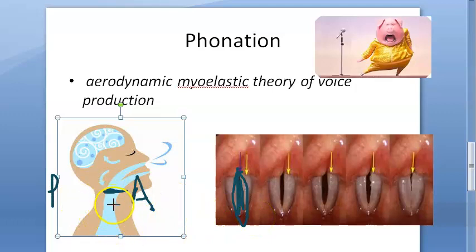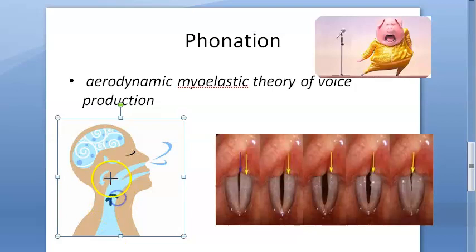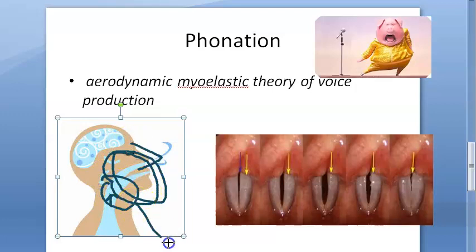Infraglottic air pressure is generated by exhaled air from the lungs, due to contraction of the thoracic and abdominal muscles. This pressure forces the cords open, releasing a small puff of air, which vibrates the vocal cords and produces sound. That sound is then amplified by the mouth, pharynx, nose, and chest — all of these act as resonators to amplify the sound coming from the vocal cords.